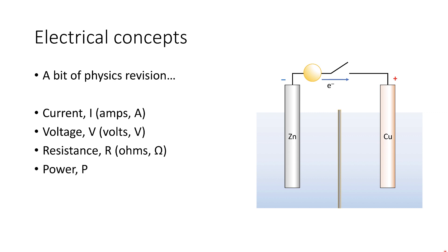Power is another phenomenon that we need to discuss. Power is simply the rate of transfer of energy — in electrical terms, it's a relationship between the current and the voltage. The last one, which is slightly different, is conductance, G, which is simply the inverse of the resistance. So the greater the conductance, the lower the resistance. These are fairly familiar ideas, but it's important to lay down which ones we're going to be using.